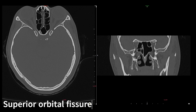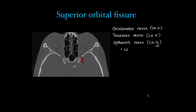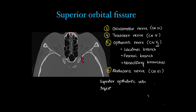Very important structures pass through the superior orbital fissure — this was a classic first-year anatomy question. There is the oculomotor nerve (CN III), trochlear nerve (CN IV), and the ophthalmic nerve, which is the first segment of the trigeminal nerve (V1). Branches of the ophthalmic nerve — lacrimal, frontal, and nasociliary — run through the superior orbital fissure. Also the abducens nerve (CN VI). So cranial nerves 3, 4, 5 (V1 only), and 6 run through it. Vascular structures include the superior ophthalmic vein and inferior ophthalmic vein.